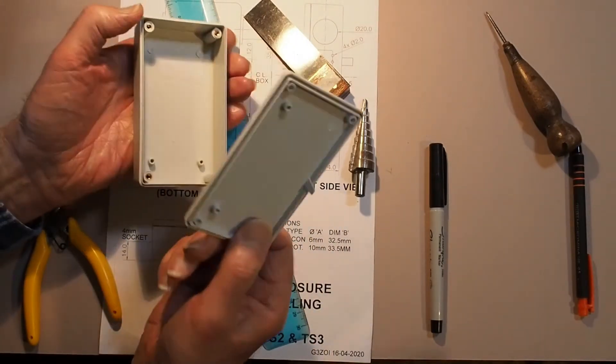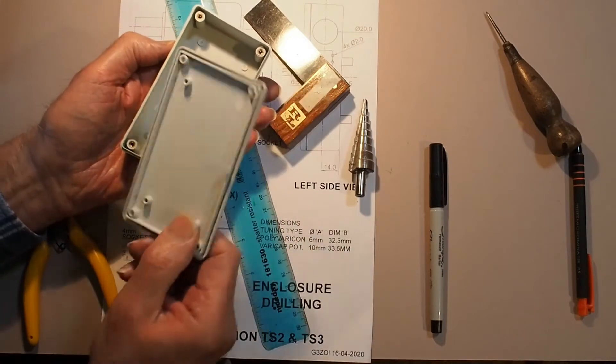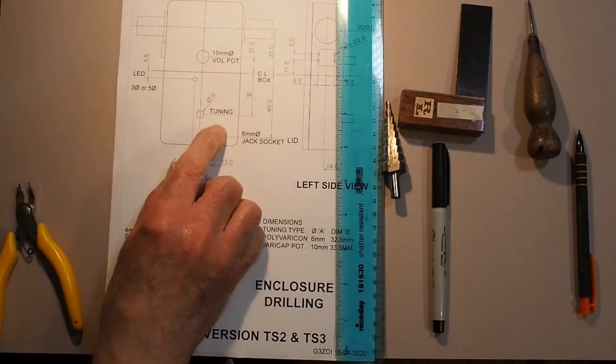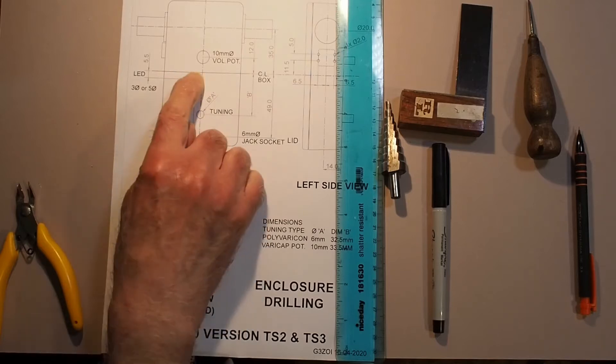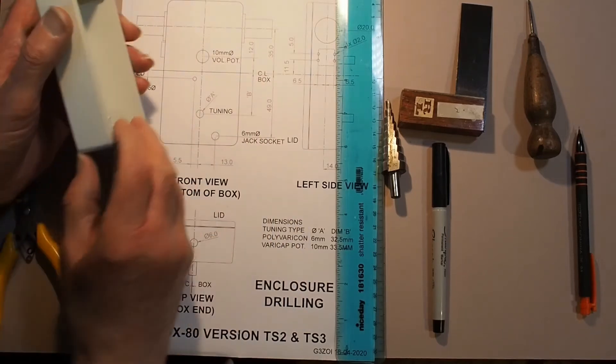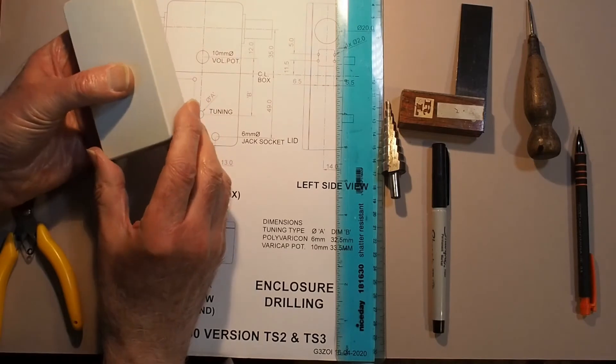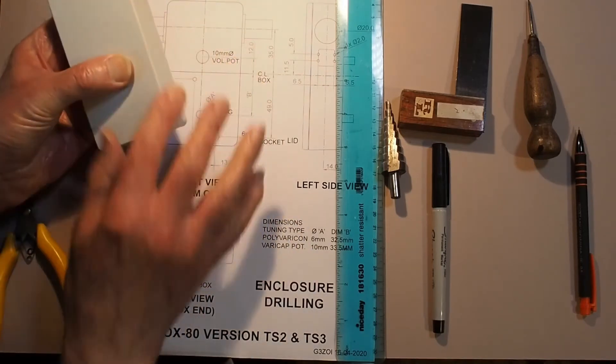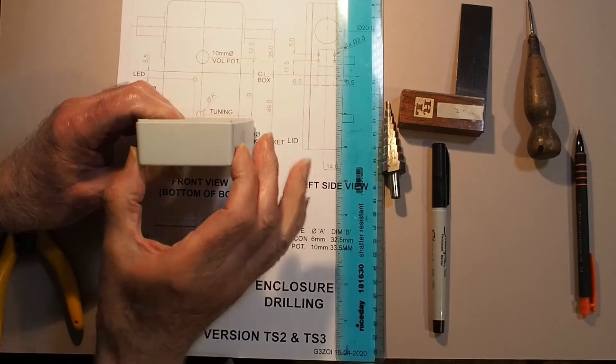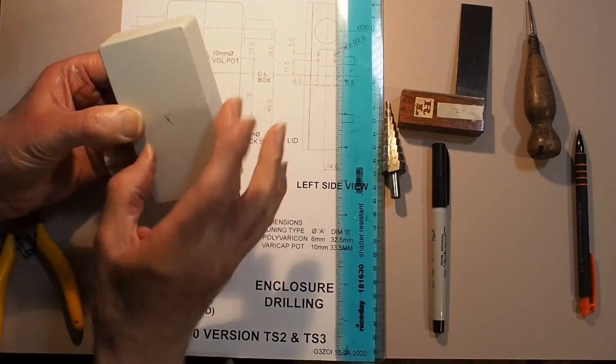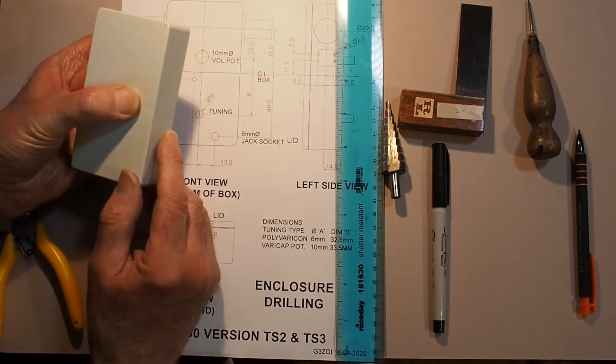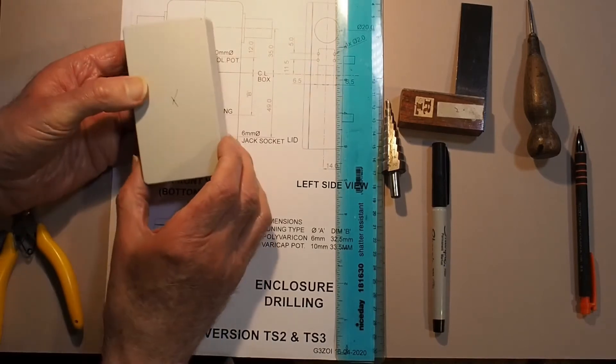This is a drawing showing the location of all the holes. To make life a little bit simpler, we've measured everything from the center line of the box. That's because these boxes have got nice rounded corners and edges and there's a slight draw on the boxes, so the bottom is slightly smaller than the top, which makes it very difficult to find a good edge to work from when measuring.